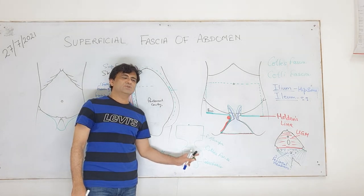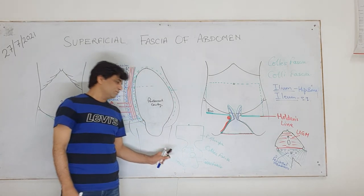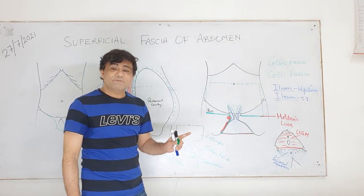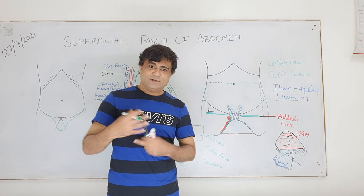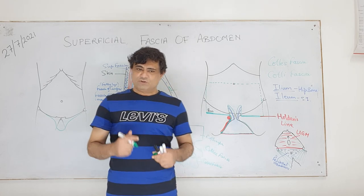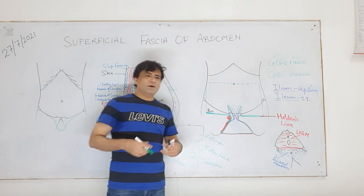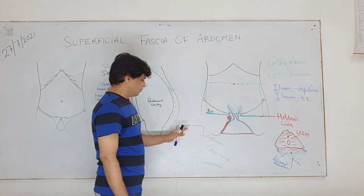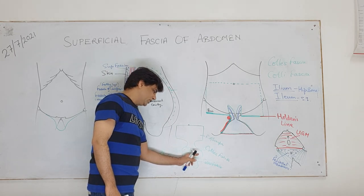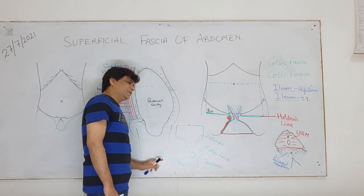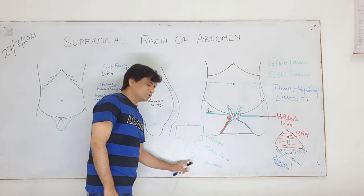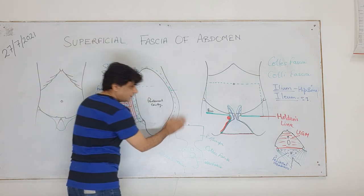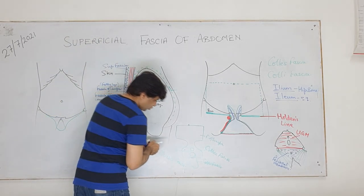The deep fascia of the scrotum is Colles' fascia; the deep fascia of the penis is Buck's fascia; the deep fascia of the perineum is Colles' fascia. They are not actually deep fascia - the terminology is very confusing in the pelvis. Just remember these are all continuations of the superficial fascia of the anterior abdominal wall - the membranous layer. So fascia Scarpa continues as Colles' fascia, which when covering the penis is called Buck's fascia and in the scrotum is Colles' fascia.